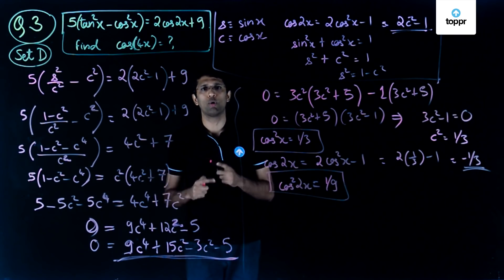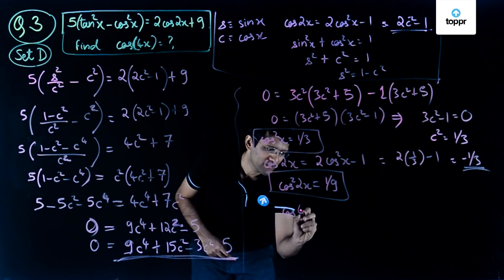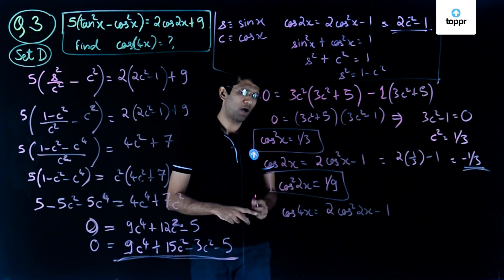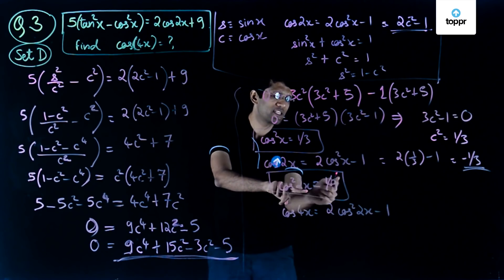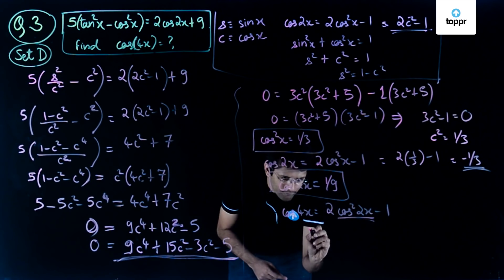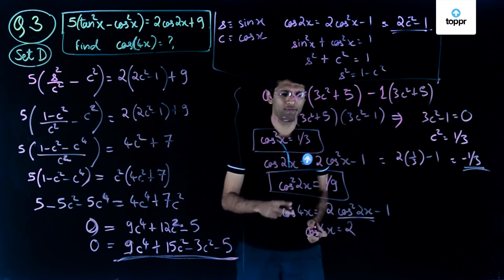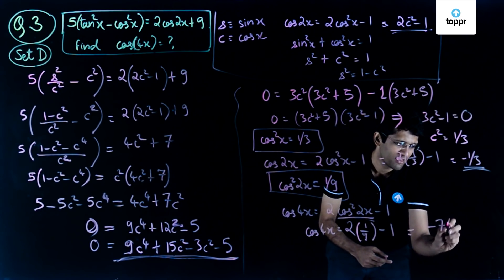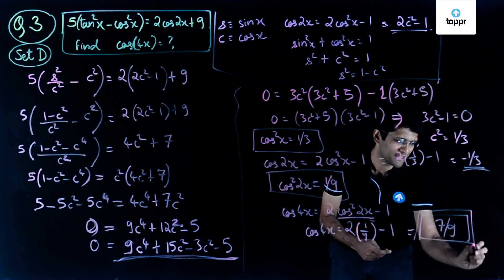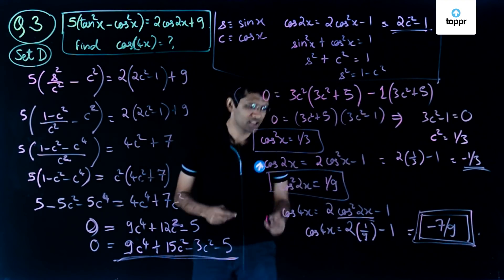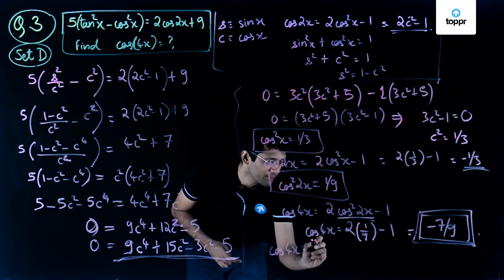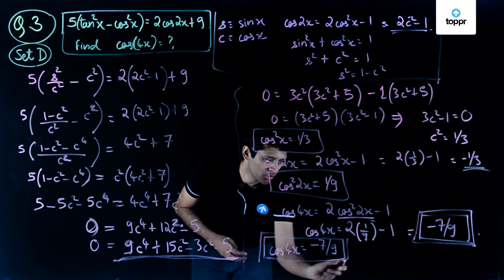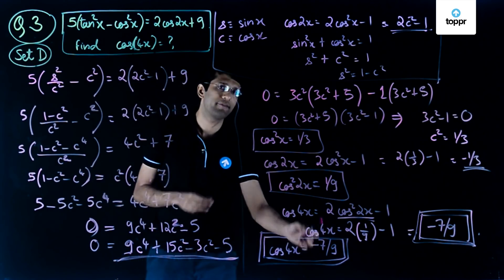Now using the identity cos of 4x equals 2 cos squared 2x minus 1, and substituting cos squared 2x equals 1 by 9, we get cos of 4x equals 2 times 1 by 9 minus 1, which gives the final answer minus 7 upon 9. So the solution to this question is cos of 4x equals minus 7 by 9, which is the fourth option.